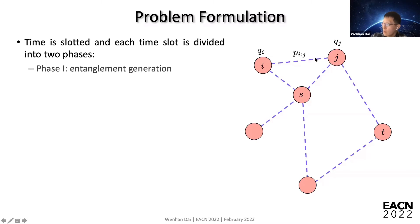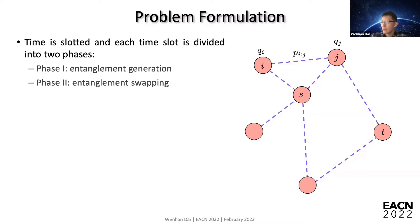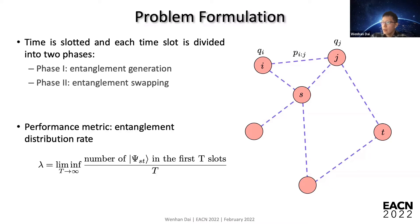We consider a slotted time system. At each time slot you can do two things: first, entanglement generation between neighboring nodes — if there is a quantum channel between node i and j, with probability P_ij you will have entanglement between them. Second, you can do entanglement swapping with success probability q_i depending on node i. We want to maximize the entanglement distribution rate between source s and sink t: the quantity Psi_st divided by T as T goes to infinity.